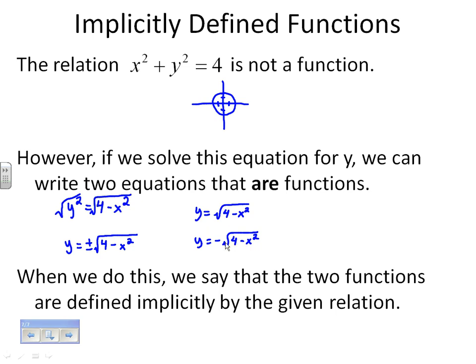So because individually these two things are functions, what we can do is we can say that the two functions are defined implicitly by the given relation. So in one of our sections of homework, they're going to give us something that looks like this—that it's a relationship, not a function—and they want us to figure out how could I write that as two functions and basically get the same thing.